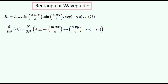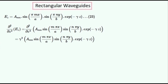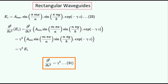Lastly we'll evaluate this partial differential equation. Substituting this expression for Ez into it gives us this differential equation. Evaluating this equation gives us this expression, which is equal to Ez multiplied by this number. So this partial derivative operator is equal to this number, which is the propagation constant squared.